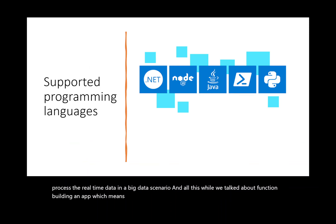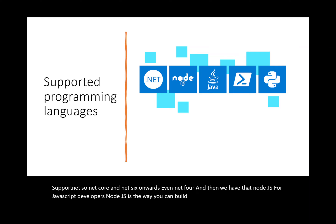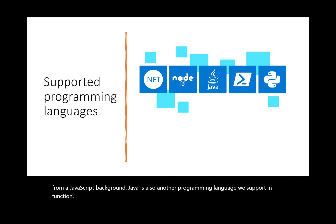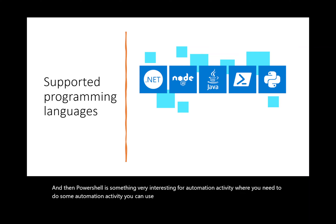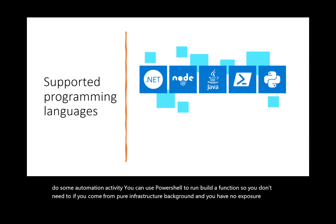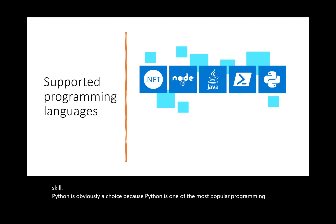Building a function app means you need to rely on a runtime. We support .NET — .NET Core and .NET 6 onwards, even .NET 4. For JavaScript developers, Node.js is the way to build a function. Java is also a supported programming language. PowerShell is very interesting for automation activities — if you come from a pure infrastructure background with no programming exposure, you can still build a function using PowerShell. Python is also supported as one of the most popular programming languages available today.